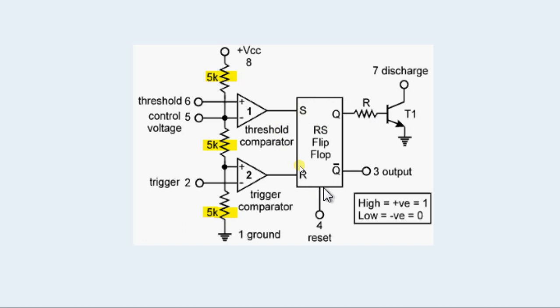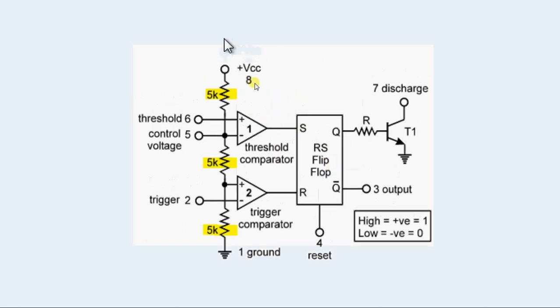Let's study the pins on the IC. Pin 8 is plus VCC, that's the power supply for the IC. Pin 6 and pin 5 are the input terminals for the threshold comparator.